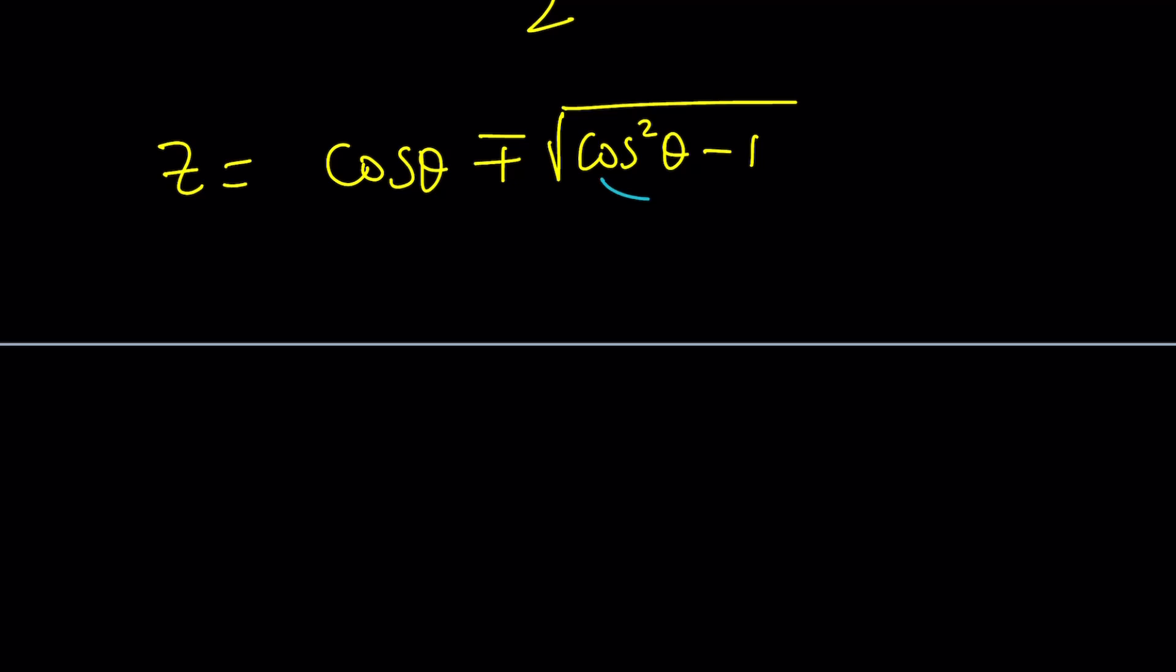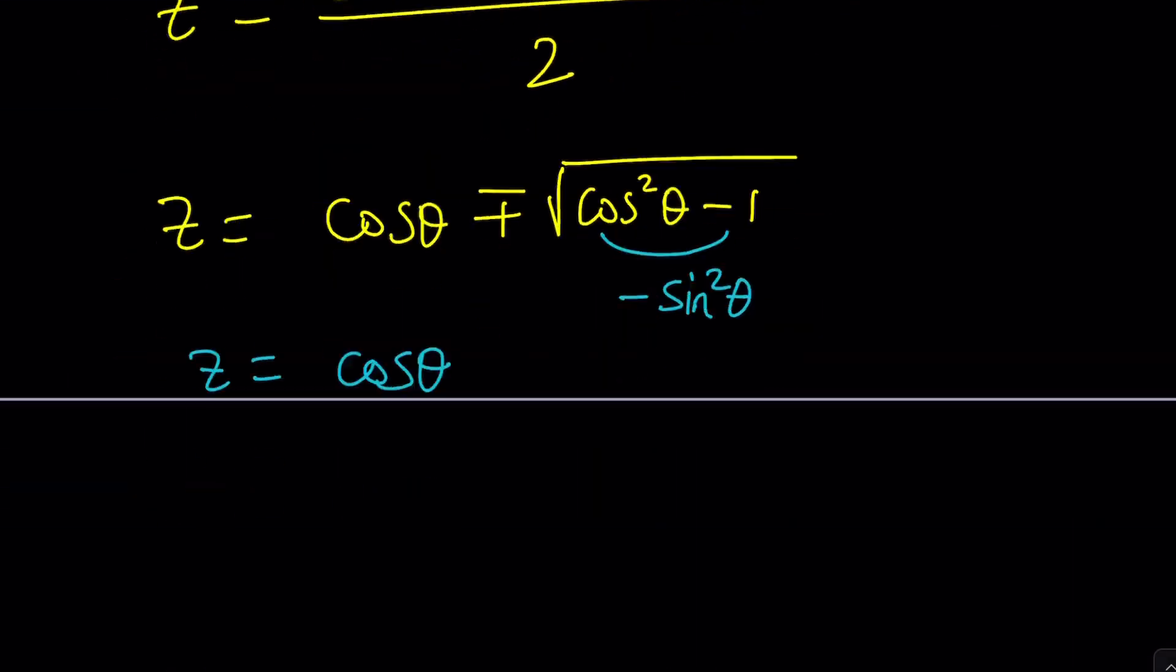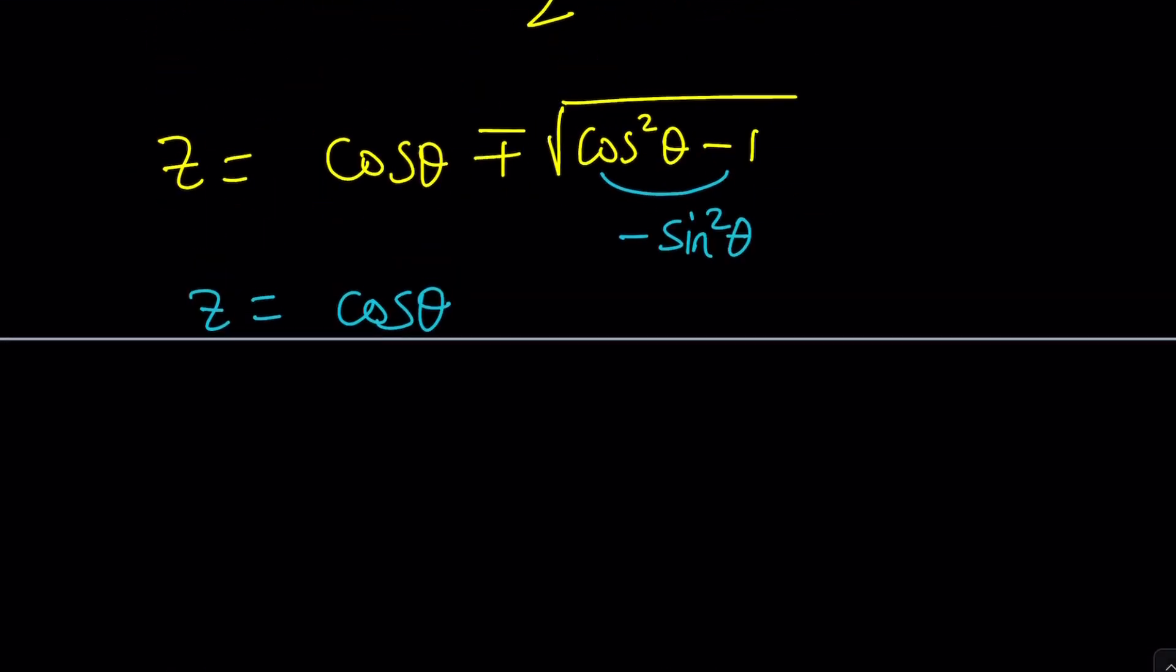If 1 minus cosine² is sine², cosine² minus 1 is negative sine². Uh-oh. We got a negative number under the radical that calls for complex numbers. And guess what this channel is all about? Complex numbers. So we can now write this as cosine θ plus minus... the square root of this is going to be i sine θ because negative sine² is negative. Make sense? Great.